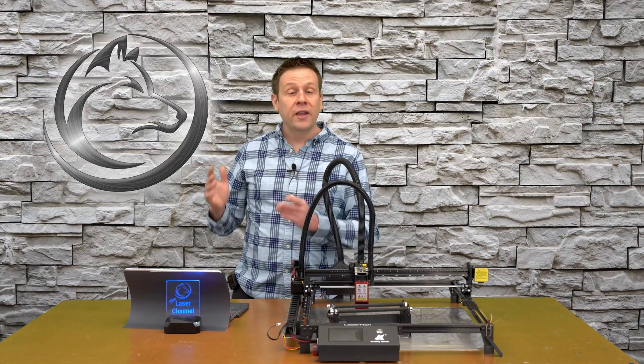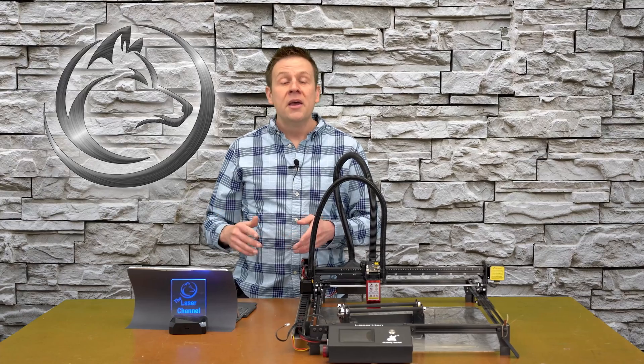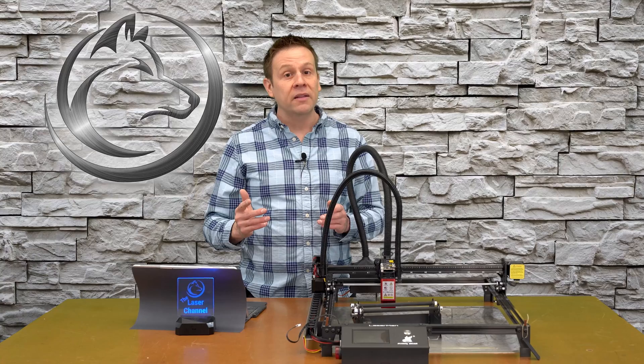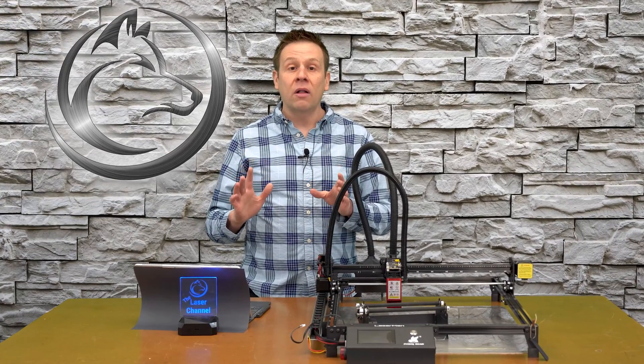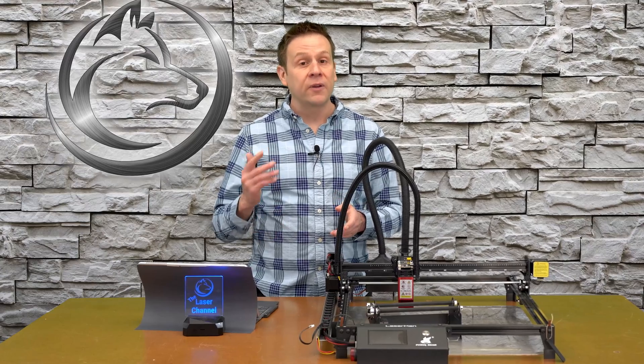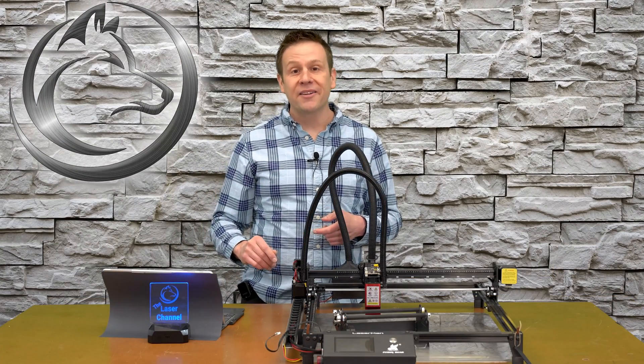I'm going to go into Lightburn software and show you how to get that rotary attachment turning, making sure that it's properly calibrated so that all of your graphics turn out correctly, and then I'm going to follow all of that up with a short and simple project of engraving a glass. Stay tuned, you won't want to miss a minute of this video.